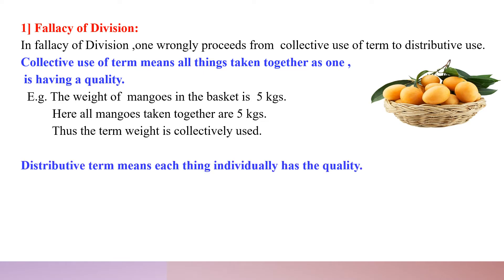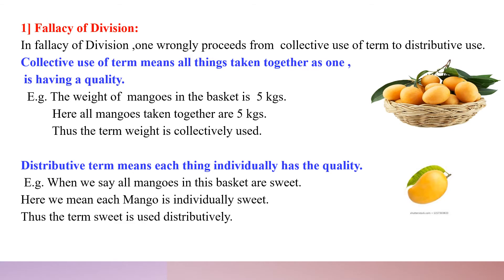Distributive term means each thing individually has the quality. For example, when we say all mangoes in this basket are sweet, we understand that each and every mango individually is sweet. Thus the term 'sweet' is used distributively.